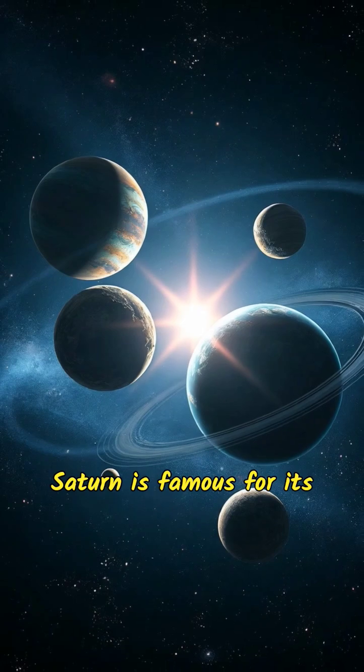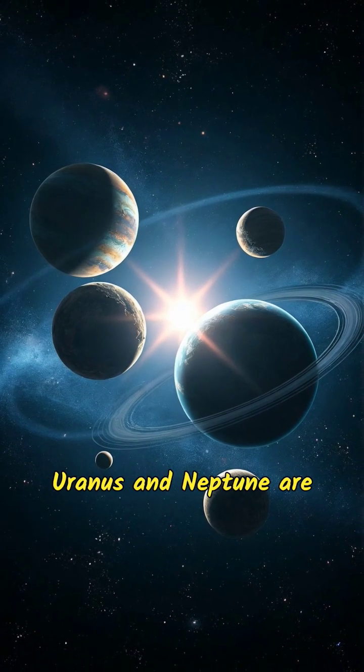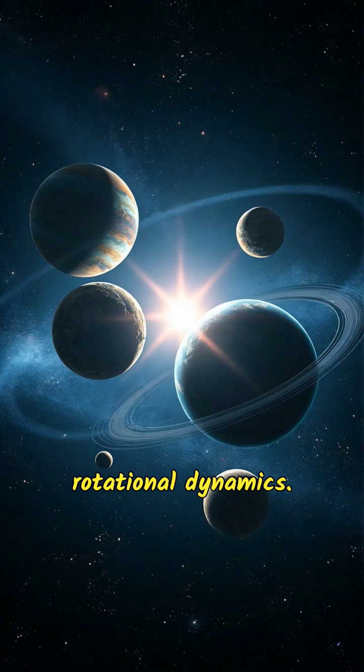Saturn is famous for its beautiful rings composed of ice and rock particles. Uranus and Neptune are ice giants, featuring extremely cold atmospheres and unique rotational dynamics.